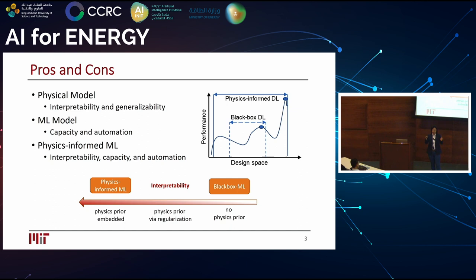However, it's not guaranteed that if we have a larger design space, a model derived by machine learning can give us the optimum for the entire phase. That really motivated our group to think about how to get the best from both worlds — incorporating physics into machine learning to achieve interpretability as well as generalizability. This is the work I'm going to introduce today.